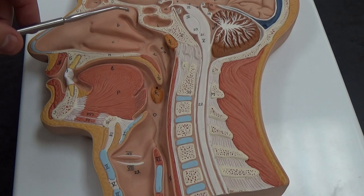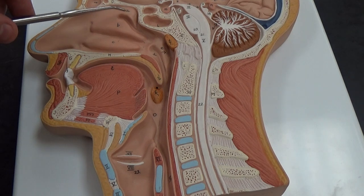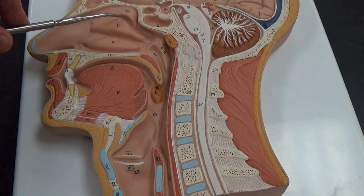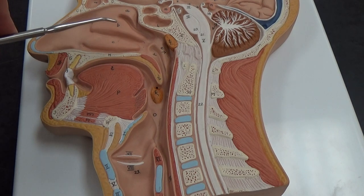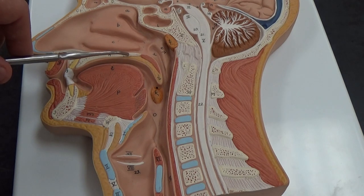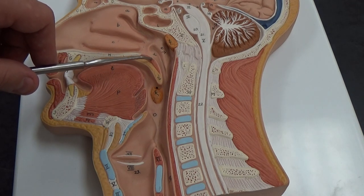You have the nasal conches, which you may remember from AP1. You have a superior nasal conch, a middle nasal conch, and an inferior nasal conch. You've got the hard palate here, the soft palate back here.